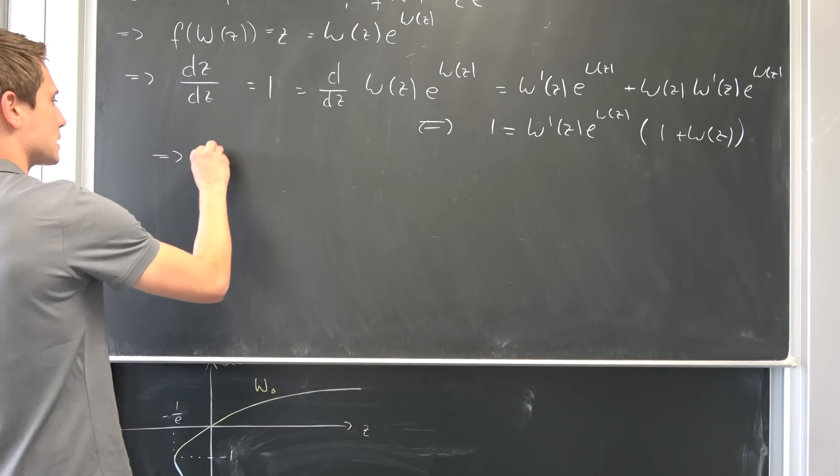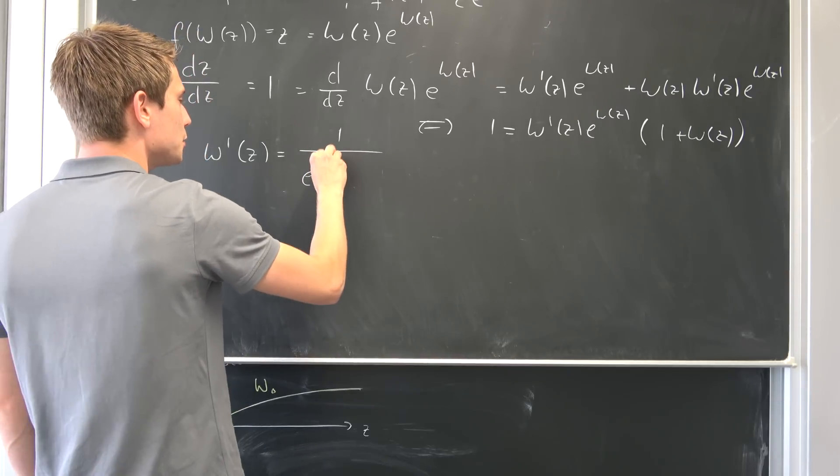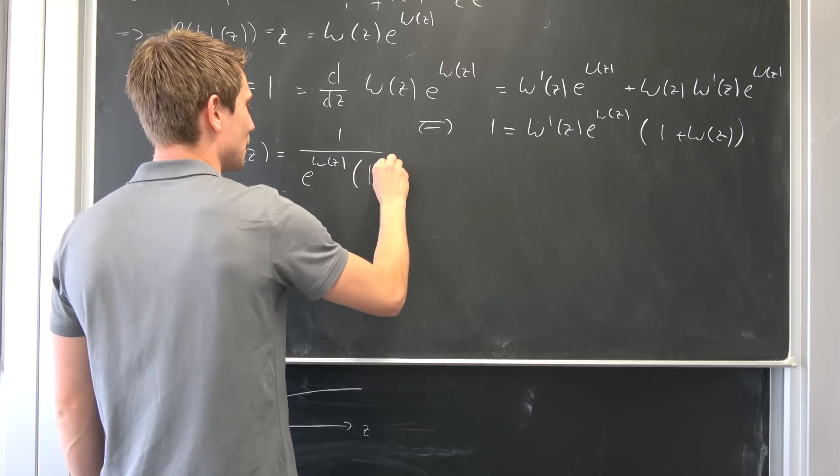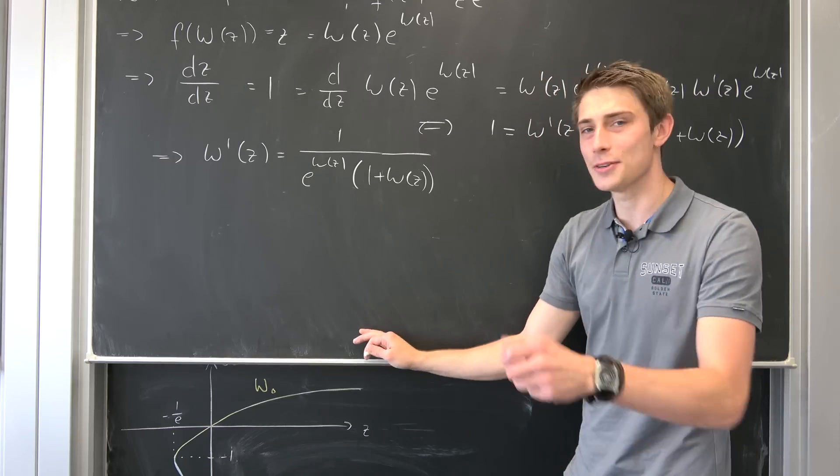So that also means that Lambert prime of z is nothing but 1 over e to the Lambert of z times 1 plus Lambert of z. Nice and fine, awesome.